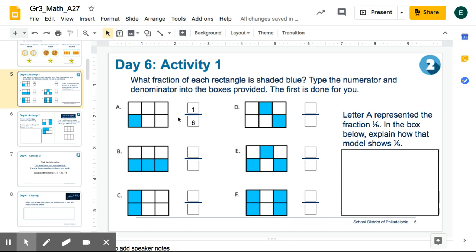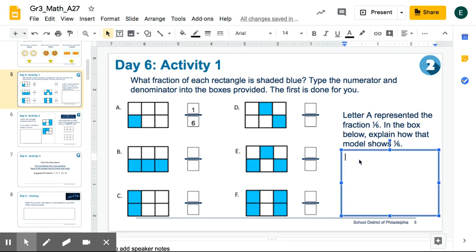In the box below, explain how that model shows one-sixth. So double click into the box to activate it and then go ahead and type.